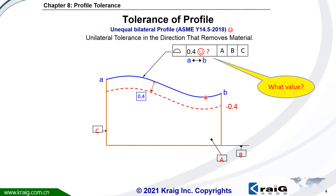So what if you want to control this surface only inward, minus 0.4, and outward is not allowed? Which value should you put here? Remember, the value after the U-circle means outward. Since you don't allow outward, this value has to be 0. You have to put 0 here — no outward, only inward 0.4. This is the specification you're going to put here.